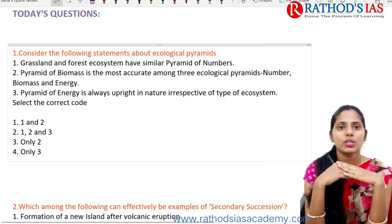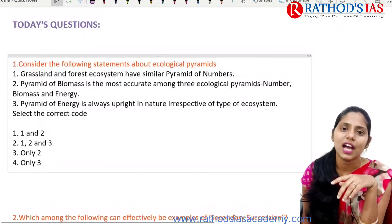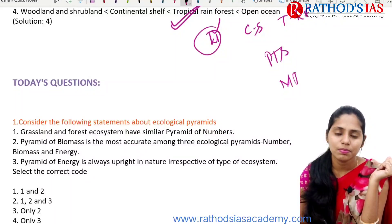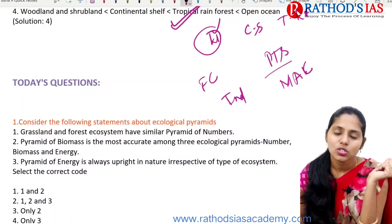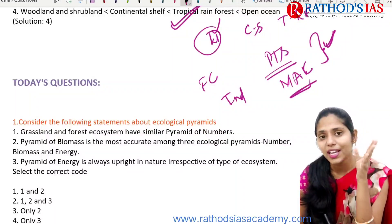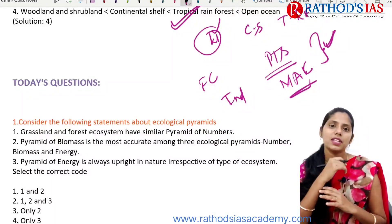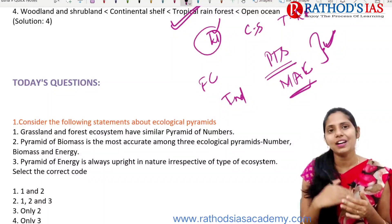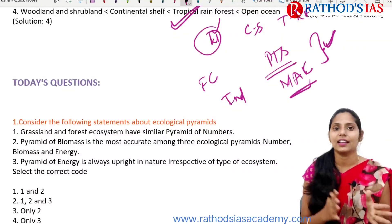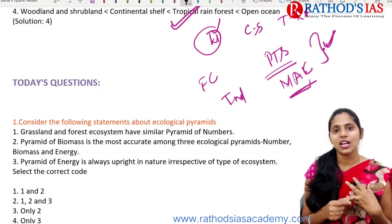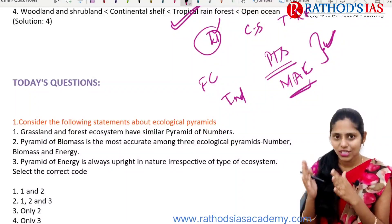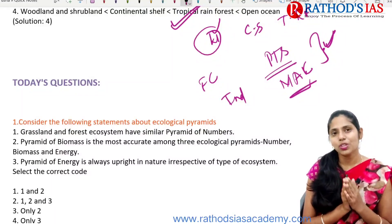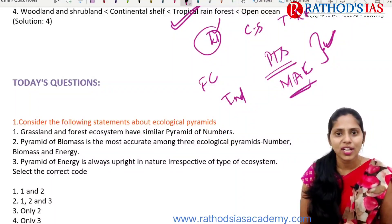Now let us see today's questions. First is regarding ecological pyramids—pyramid of numbers, pyramid of biomass, and pyramid of energy. Please try to read the three statements and give your answer in the comment box. The second question is regarding secondary succession. We have two types of succession: primary succession and secondary succession. You can read the examples of secondary succession and give the correct option. Try to answer these two environment questions.